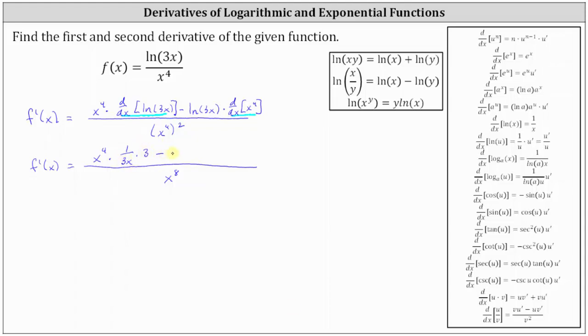And then we have minus natural log of three x times the derivative of x to the fourth with respect to x, which is four x cubed. The denominator remains x to the eighth for now.